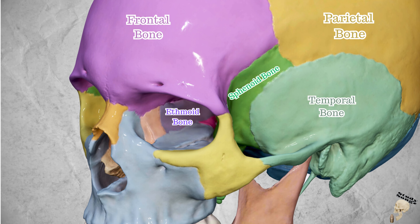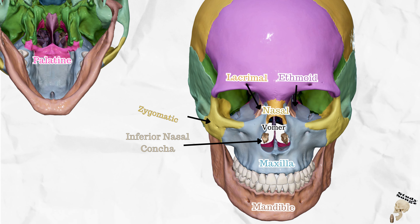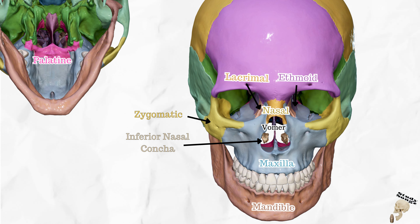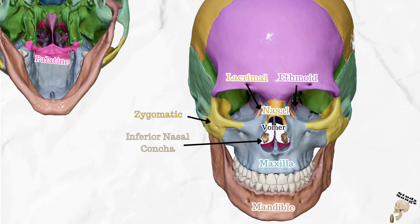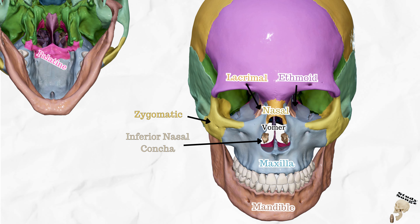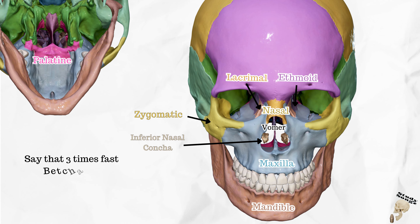Don't forget the fourteen called facial: mandible, maxilla, lonely little vomer. Zygomatic bone getting pinched by your mother. Lacrimal bone is found in the eye. Nasal bone is also close by. Roof of your mouth is a thing called the palatine. Can't forget inferior nasal conchae — say that three times fast but you can't count ya.